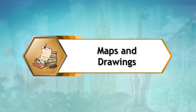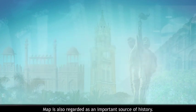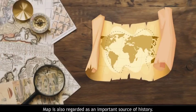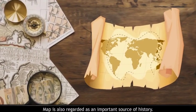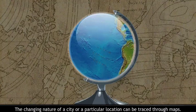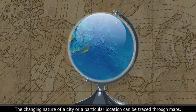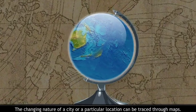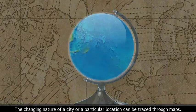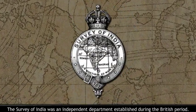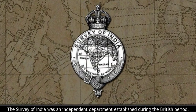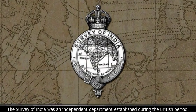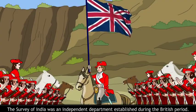Maps and Drawings. A map is also regarded as an important source of history. The changing nature of a city or a particular location can be traced through maps.